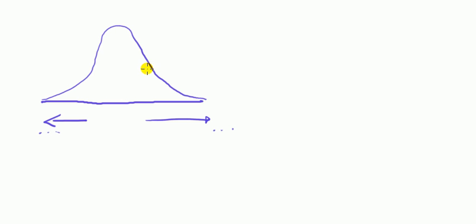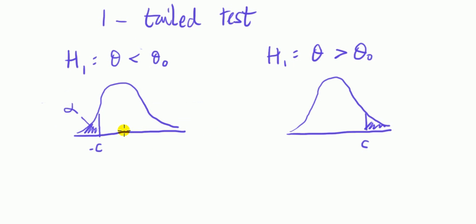When we are doing hypothesis testing, recall that we have to decide: is it a one-tailed test or two-tailed test? We recognize a one-tailed test by looking at the alternative hypothesis. If H1 states that some parameter theta is less than a number theta zero, then the critical value is going to be a negative value — minus C. The alpha will typically be at 5%, though it's usually picked at 1%, 5%, or 10%. If the question doesn't say, we usually do it at 5%.